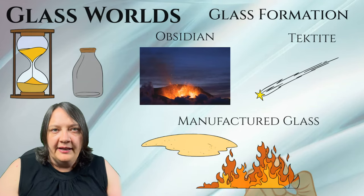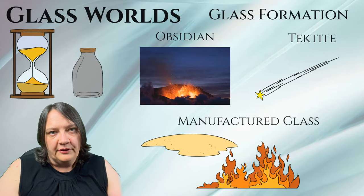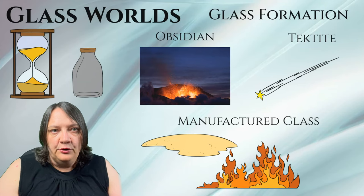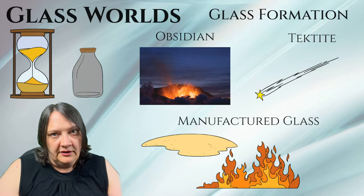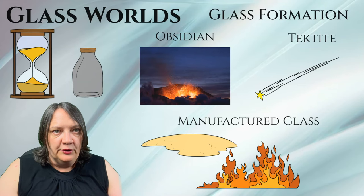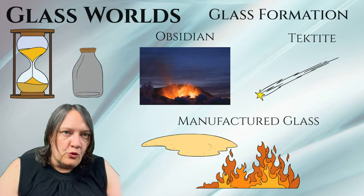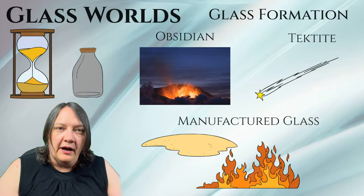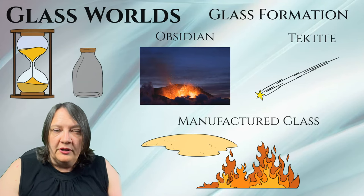Limestone can be added to improve durability and chemical stability, typically making up around five to ten percent of the glass composition. Aluminum is often added in small amounts to increase hardiness and chemical resistance. But these aren't the only things you can add — you can add a variety of materials to glass mixtures to modify its properties, appearance or color.